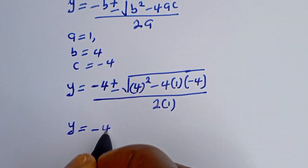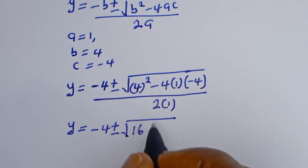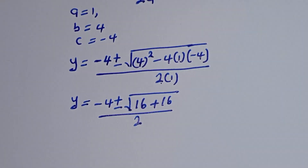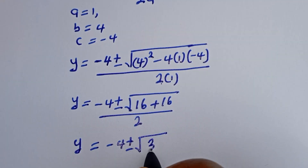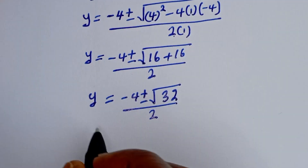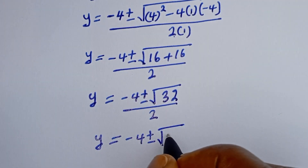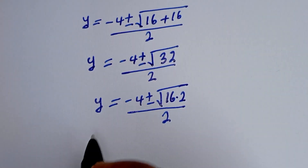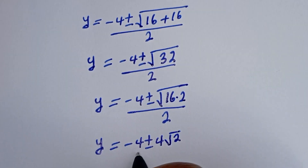Y is equal to minus 4 plus or minus the square root of 16 plus 16 — that is 32 — divided by 2 times 1. Now Y is equal to minus 4 plus or minus square root of 32, divided by 2. Simplifying, square root of 32 is 4 root 2, so Y is equal to minus 4 plus or minus 4 root 2, divided by 2.